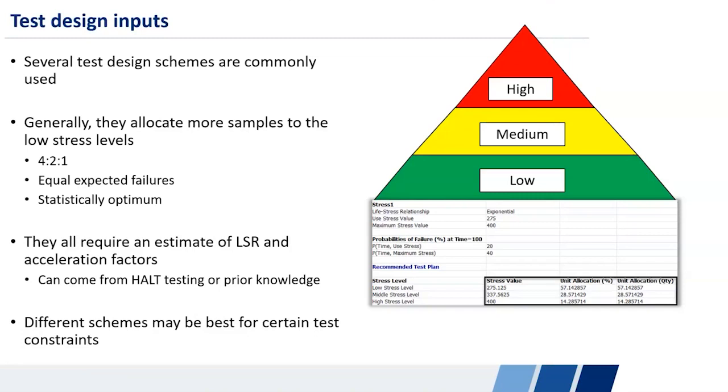So there are different schemes. There's a four, two, one scheme, which allocates four units at the low stress level to two units at the medium stress level to one unit at the high stress level, and then finds the optimum stress levels given that constraint. There's equal expected failures, which I described earlier, where it tries to find stress levels and sample allocations such that let's say you've got 20 units, maybe such that you get exactly two failures or expect exactly two failures at the low, medium and high stress levels.